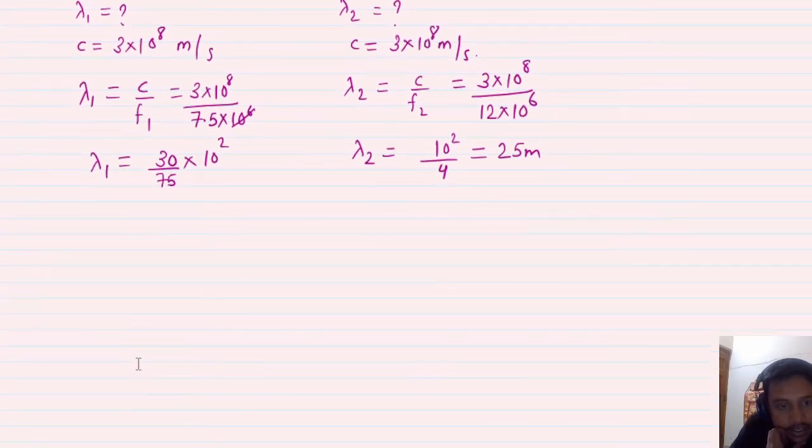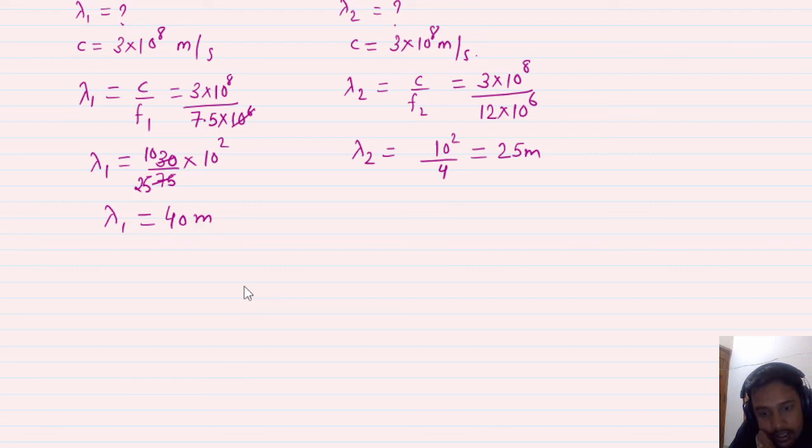Now solve this. Lambda 1 will be equal to, 3 cancels with 3, 25 times. This becomes 100 by 25 which is 4, 4 times gives 40 meter. So your wavelength is between 40 meter to 25 meter.